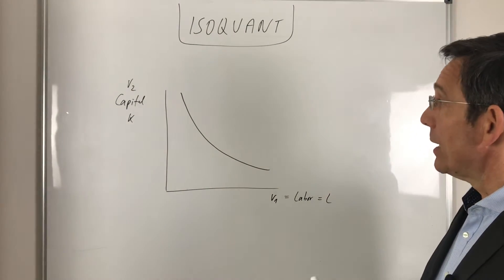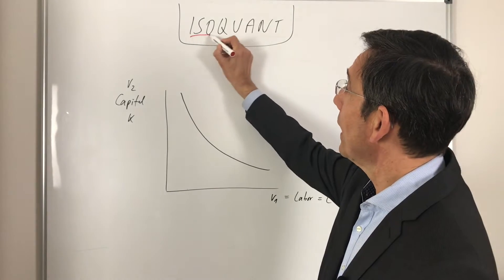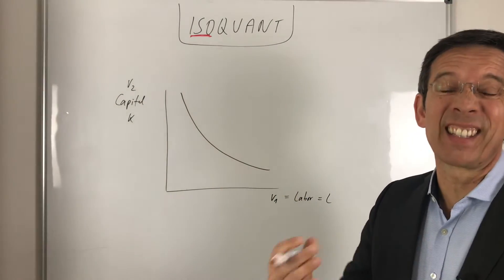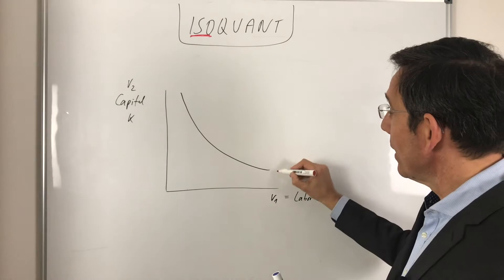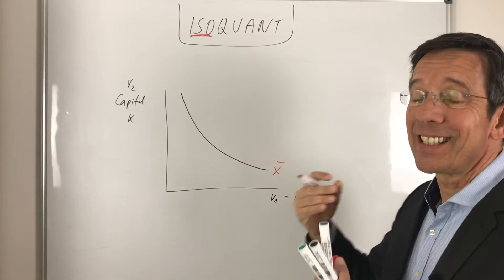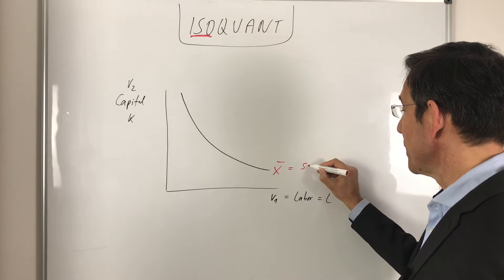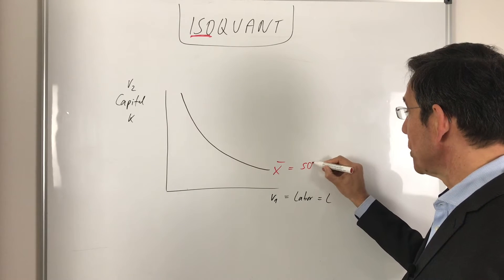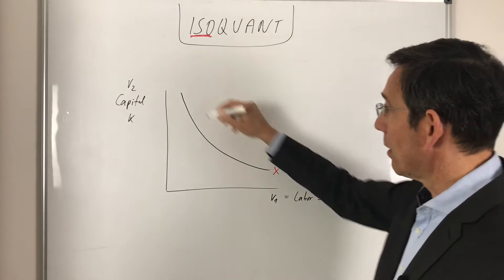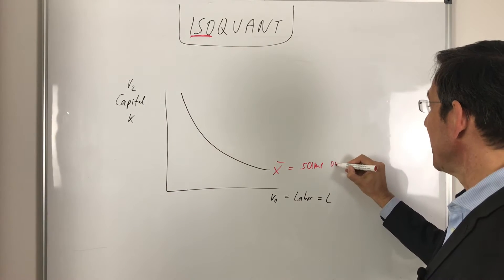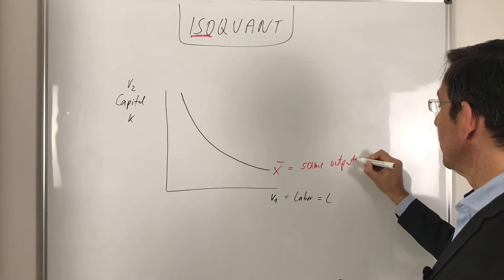However, it's an isoquant. ISO stands for the same, right? It's here that we have the same output level. So ISO stands for the same and that just means we're here, here on the curve, on the same output level.